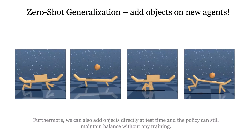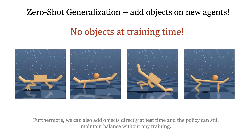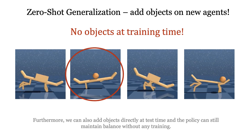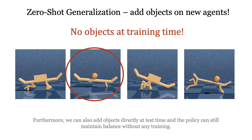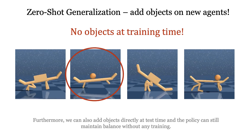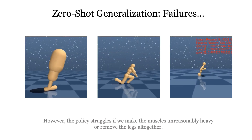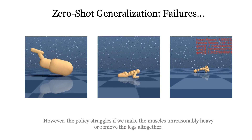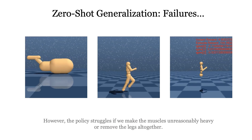Furthermore, we can also add objects directly at test time, and the policy can still maintain balance without any training. However, the policy struggles if we make the muscles unreasonably heavy, or remove the legs altogether.